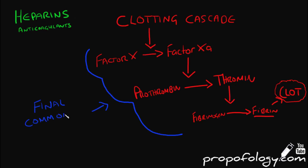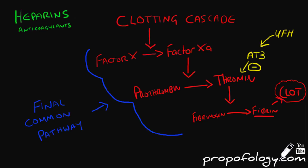This is called the final common pathway. Activated antithrombin 3 inhibits thrombin, which therefore stops this fibrin clot from being formed. It is activated by unfractionated heparin. Low molecular weight heparins act directly on factor 10a and stop the clotting process earlier in the pathway — this is how they both work.